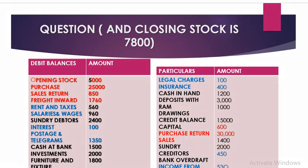Now we will work through a question to understand the components of the trading, profit and loss account, and balance sheet. A trial balance is given, and the closing stock of 7,800 is mentioned outside the trial balance. If the closing stock is given outside the trial balance, it must be taken in the trading account and also in the balance sheet. First, we identify which items belong to the trading account, which to the profit and loss account, and which to the balance sheet — having this clarity makes it easy to prepare all three statements.